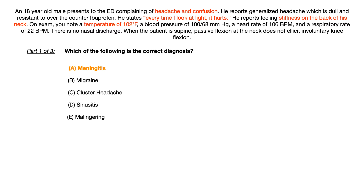For sinusitis: you could have a fever and headache with sinusitis, but there is no nasal discharge here, so you can effectively rule out sinusitis. For choice E, malingering: proving malingering would require more than this. Because the patient has a temperature of 102°F and all the hallmark symptoms of meningitis, it's probably not malingering. The best answer is meningitis, even though Brudzinski sign is negative. Just because you don't have a Brudzinski or Kernig sign, don't walk away from meningitis — that is not correct.